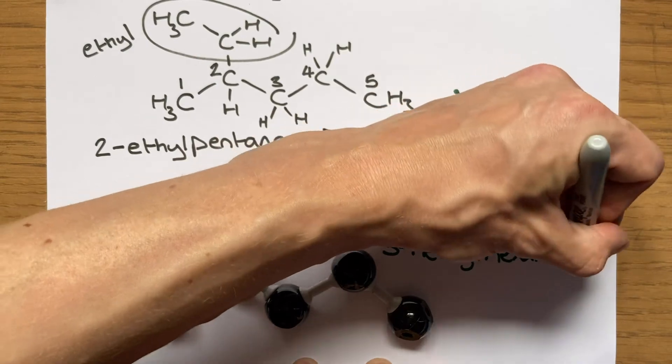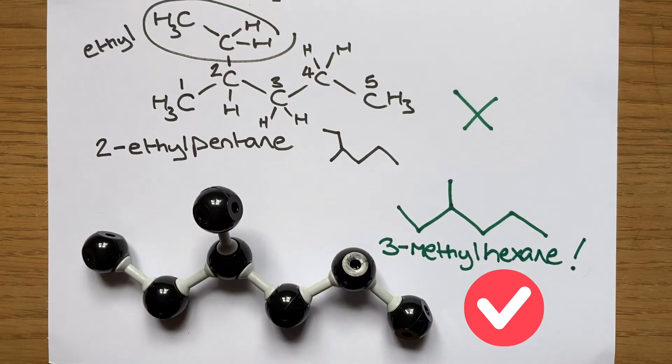The only way to find this out is to always double check your structures and count out in multiple directions where your longest chain might be.